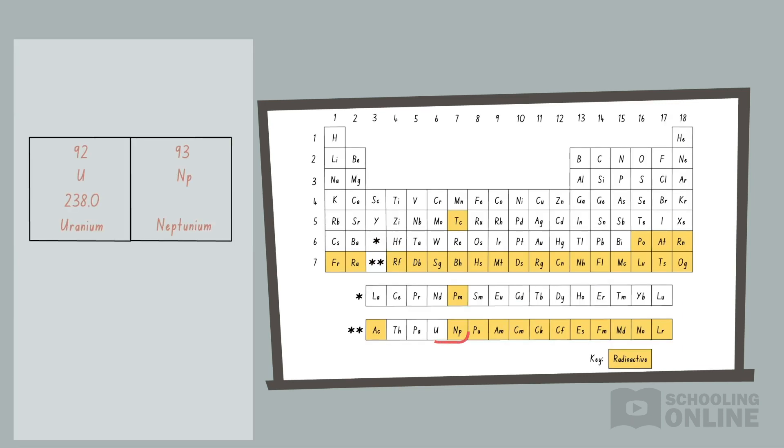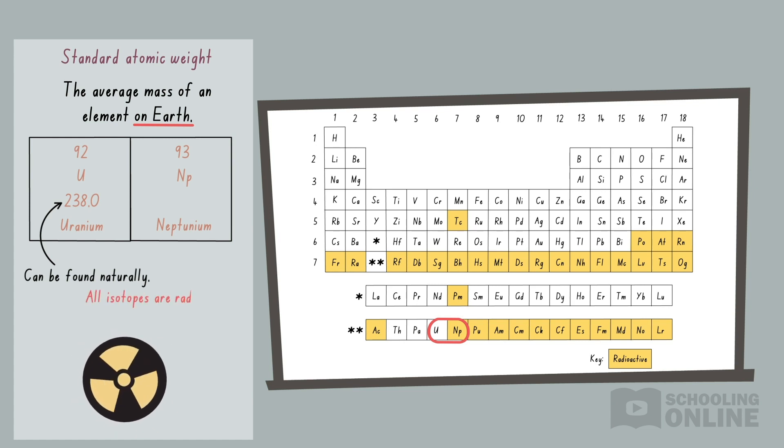As mentioned earlier, the standard atomic weight is the average mass of an element on Earth. Elements with a standard atomic weight can be found naturally in the ground, water or air. On the contrary, if an element's standard atomic weight is missing, then all isotopes are radioactive. It can only be produced artificially in nuclear reactors or particle colliders.